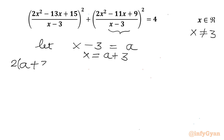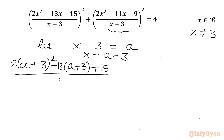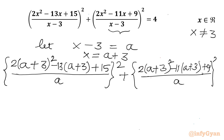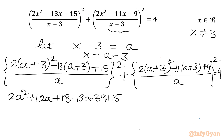So I will write 2(a + 3)² - 13(a + 3) + 15 over a², plus the second bracket: 2(a + 3)² - 11(a + 3) + 15, then plus 9 divided by a², with the right-hand side equal to 4. Now I will simplify: I can write 2a² + 12a + 18 - 13a - 39 + 15 divided by a².